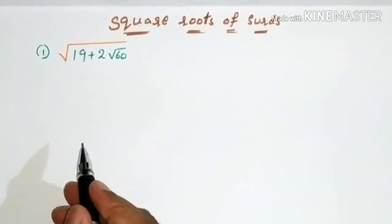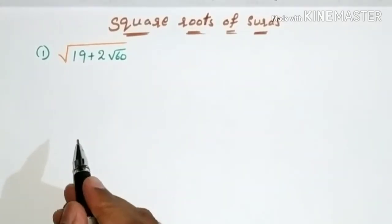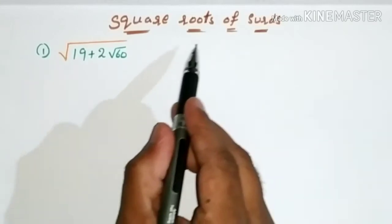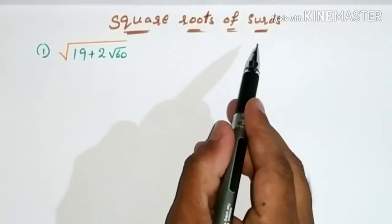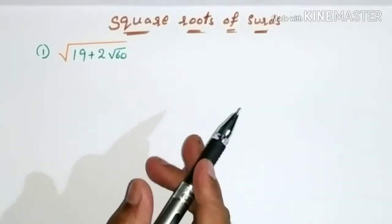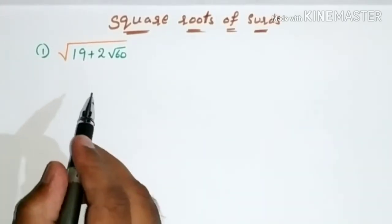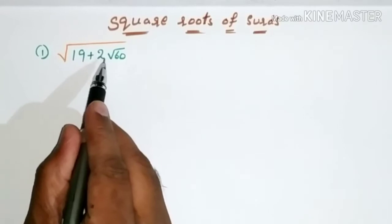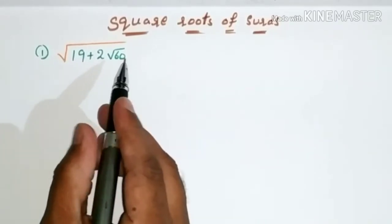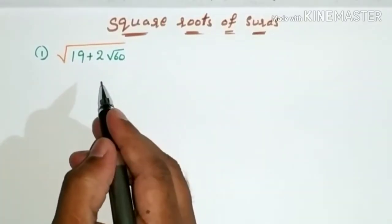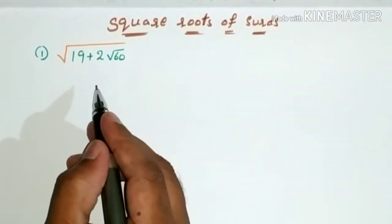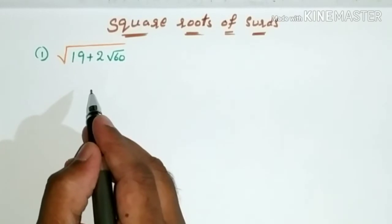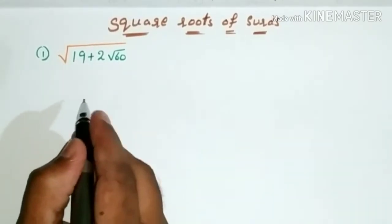Hi friends, today I am going to explain about the square roots of surds. Here I am taking one question: square root of 19 plus 2 root 60. Before that, let me explain how to find the square root of any surd.